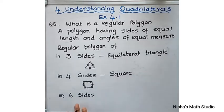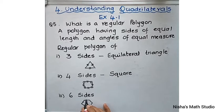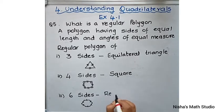Next, you have six sides. A six-sided polygon — counting 1, 2, 3, 4, 5, 6 — where all six sides are the same, is called a regular hexagon.